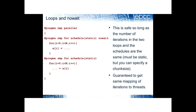What you need to guarantee is that the same threads are going to execute the same iterations in both loops. This is guaranteed so long as the schedules are the same and they must be static. You can specify a chunk size or not, and you are guaranteed to get the same mapping of iterations to threads in both loops.